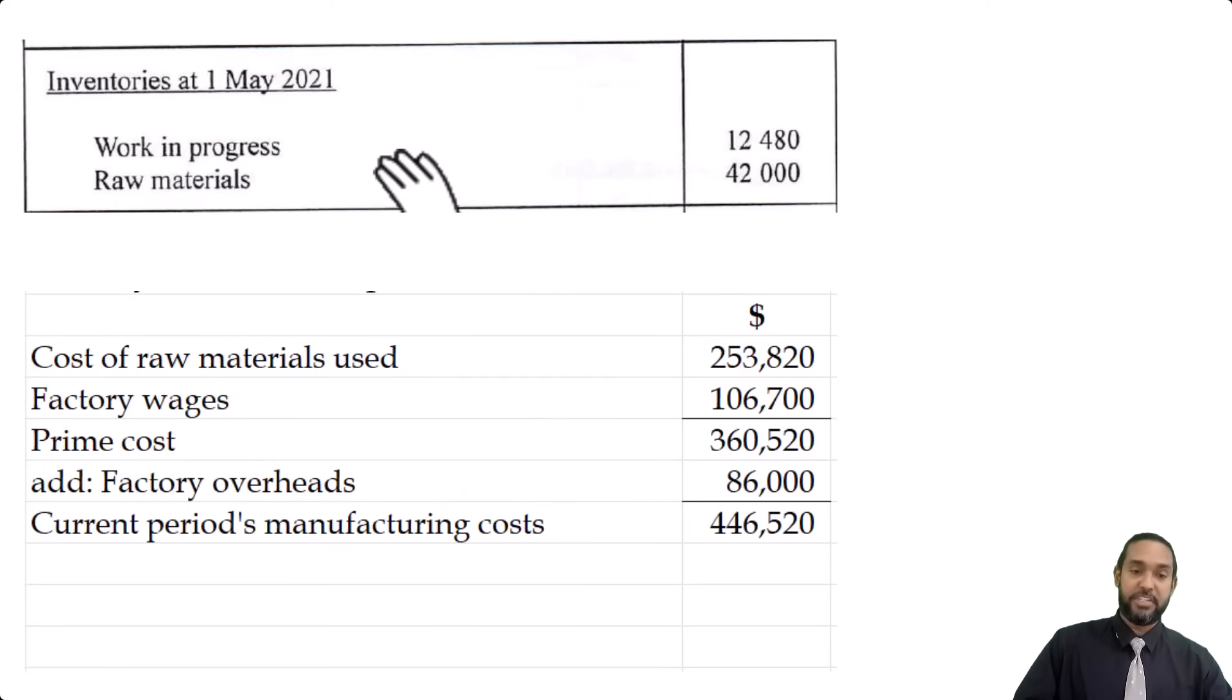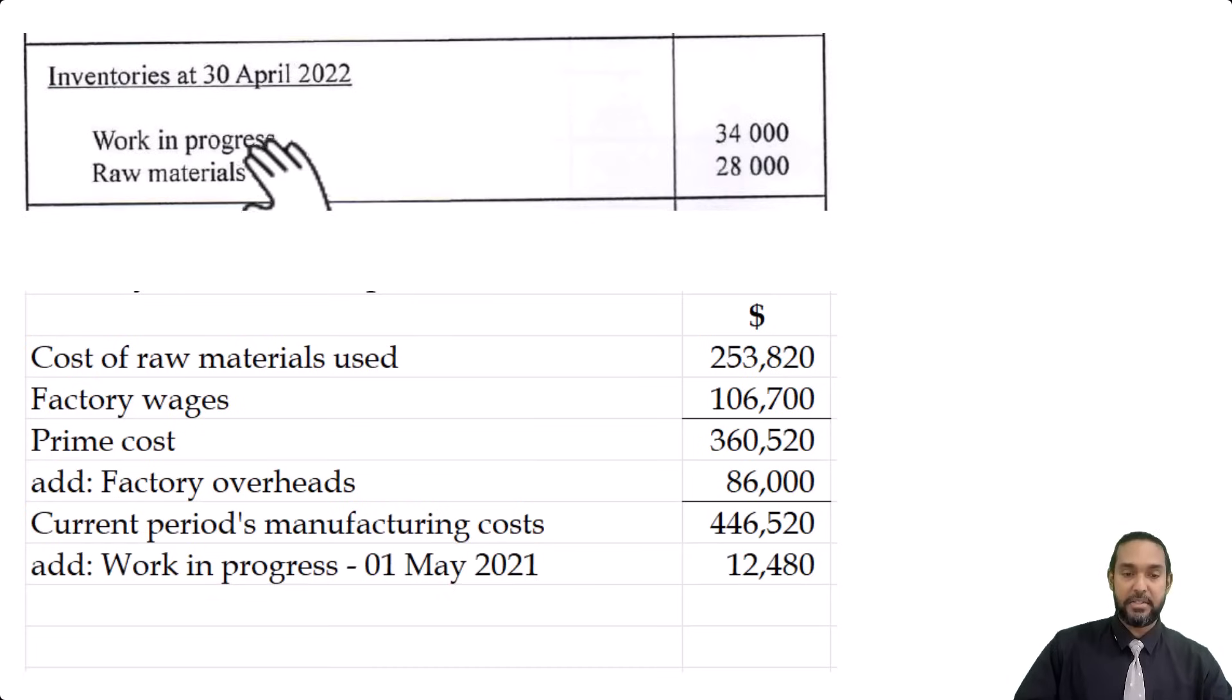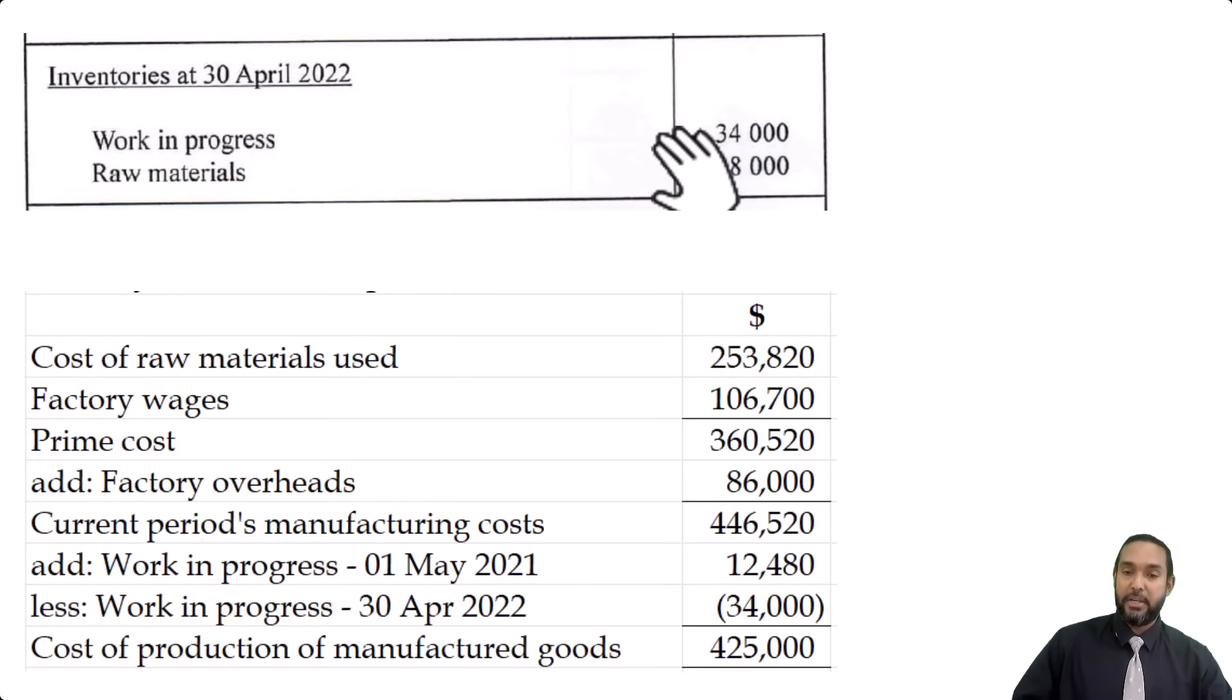And all we do from here is adjust for the work in progress. We add the work in progress at start, 12,480. We subtract the work in progress at end, 34,000. And we get our cost of production of manufactured goods of 425,000. Well, there's one more part of this question. Let me pull it up real quick.